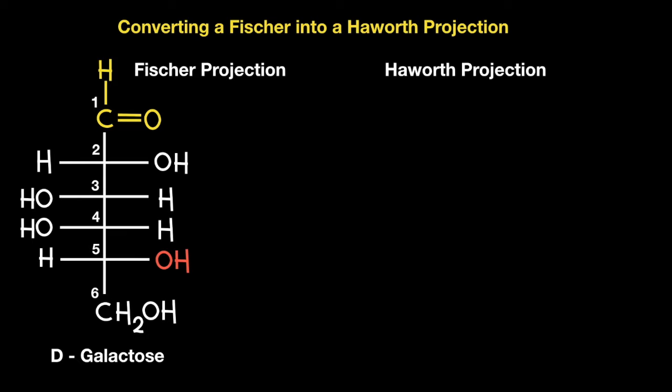Typical exam questions with model answers will be presented at the end of the video to help you with your understanding. Before I begin I just need to clarify which regions of the molecule are involved in forming the cyclic structure, namely the OH coloured in red on carbon number 5 and the aldehyde functional group located at the top, which I have coloured in yellow.